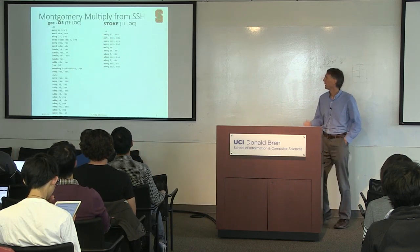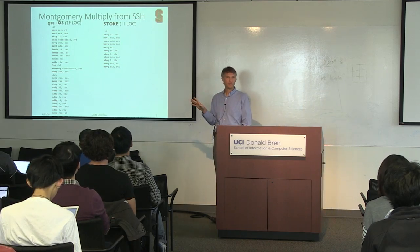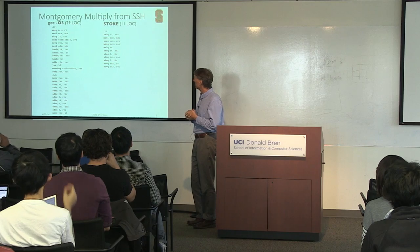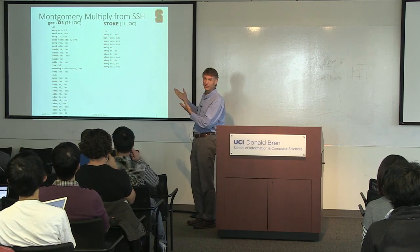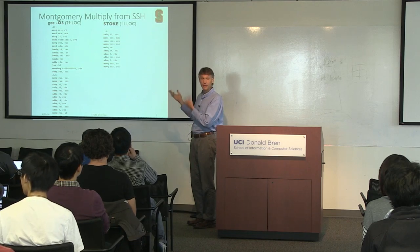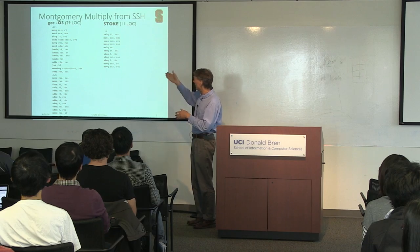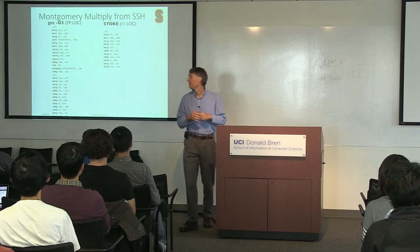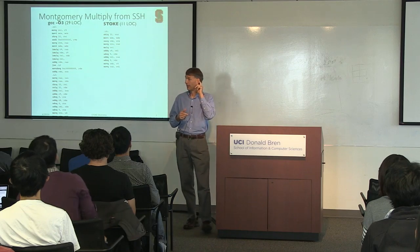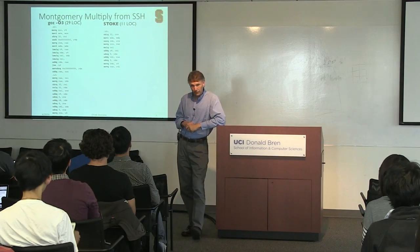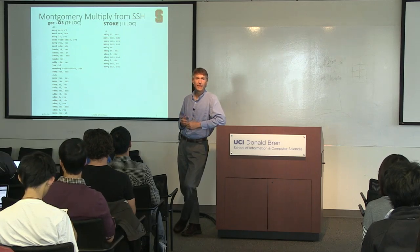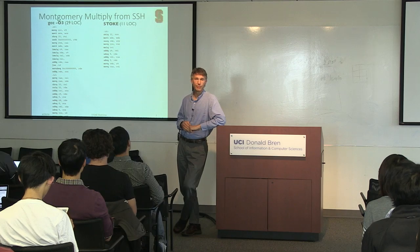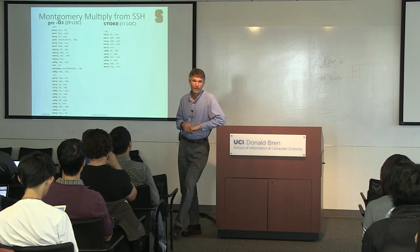Here's the Montgomery Multiply routine from SSH. SSH is a core piece of software we all use to securely log in to remote machines, and this is the core of the core — the routine that does the inner loop of the encryption and is performance-critical. On the left is the code produced by GCC -O3 with all optimizations enabled, and on the right is the code produced by our compiler. It's about 60% faster than the GCC code. What I'm going to tell you about is how a team of two or three graduate students could build an optimizing compiler that outperforms GCC and is maybe 5% of the size of GCC.